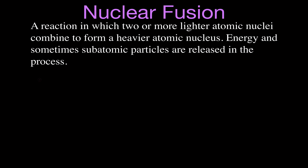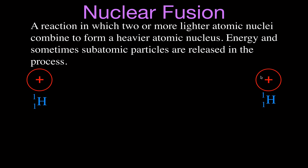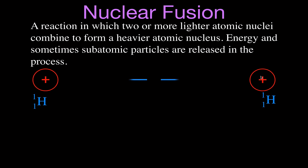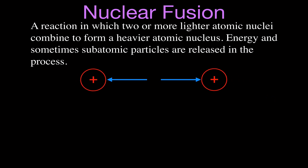What we're going to do is take two lighter atomic nuclei — the lightest ones possible — which is a hydrogen atom and a hydrogen atom, hydrogen-1. Hydrogen-1 has one proton and no neutron, an atomic number of 1 and a mass number of 1. We're talking about nuclear fusion, so we'll concentrate on these two protons as the nuclei of our hydrogen atoms. When we try to bring those hydrogen atoms very close together, we encounter a problem: both are positively charged particles, so they feel a force of repulsion — the Coulomb force, or electric force.